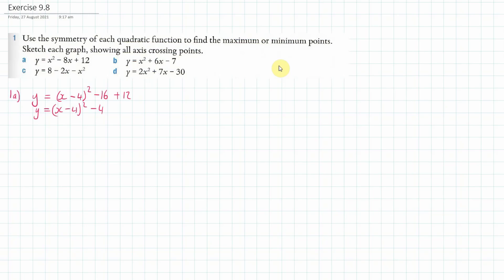As I discussed at the end of the last video — I hope you watched that; if you don't understand what I'm doing here, you might want to watch that — we know that the minimum point is going to be when x is 4, because we make this squared bracket equal to 0, since that's the lowest it can be, and then the y value will be minus 4.